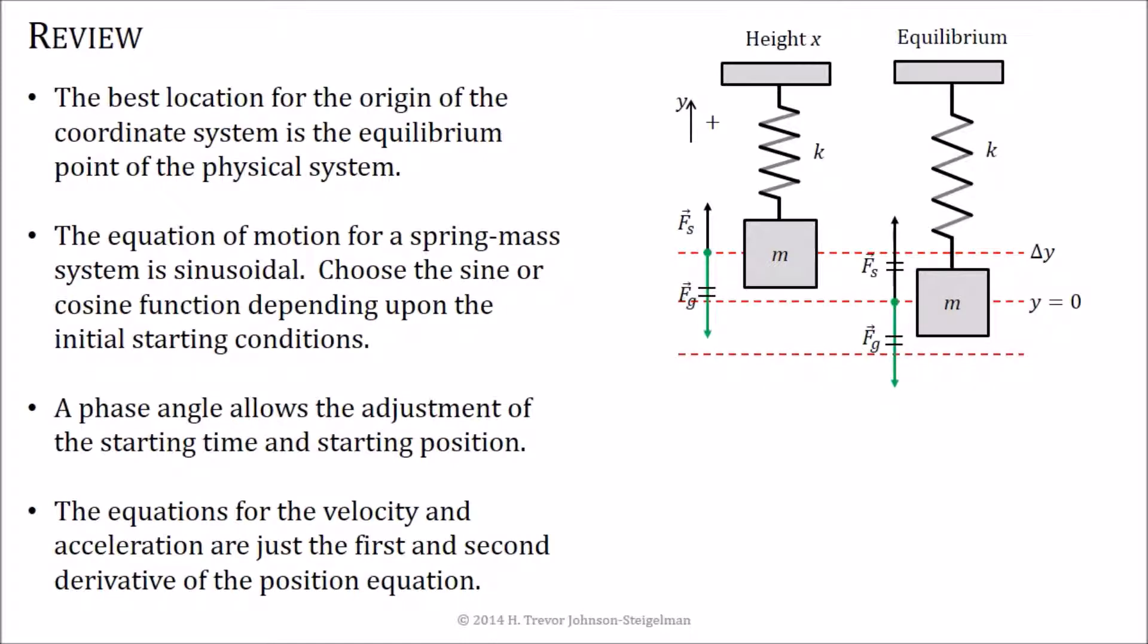Okay, now in review, the best place to put that origin is right at the equilibrium point of the system. That way we can oscillate around this spot and not have to worry about offsets, not have to worry about anything else that could potentially make it look more complicated than it really is. The equations of motion are sinusoidal. You can either choose the sine or cosine depending on where you want to start the motion at. And finally, the velocity and acceleration are just the first and second derivatives of our motion.